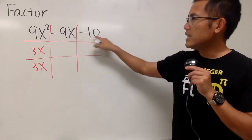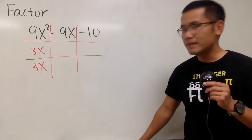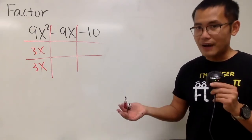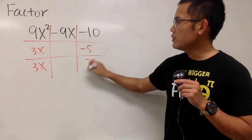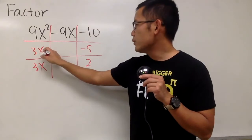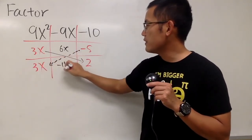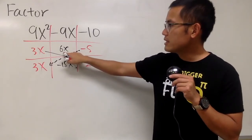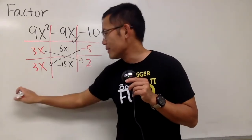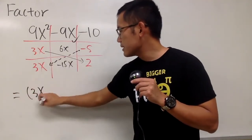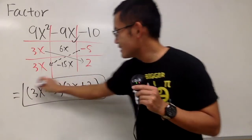Now, look at negative 10. What times what gives us negative 10? We have choices: 1 times negative 10, negative 1 times positive 10, or 2 and 5 with one negative. The correct combination is negative 5 and 2. If we take 3x times 2, that gives us 6x. And negative 5 times 3x gives negative 15x. 6x minus 15x equals negative 9x — it checks! So the answer is 3x minus 5 times 3x plus 2.